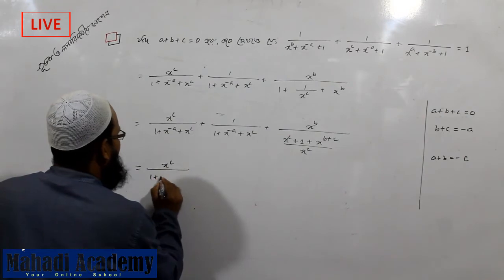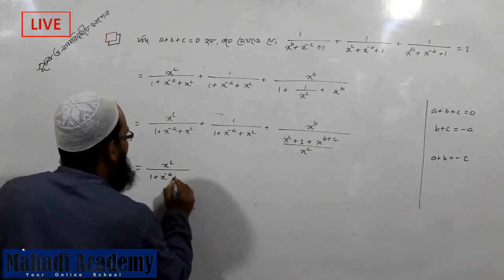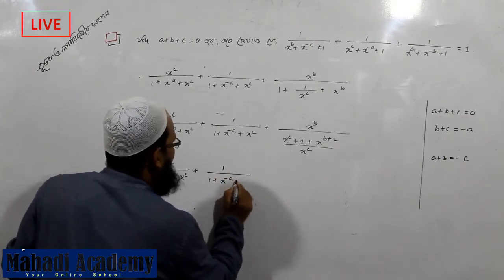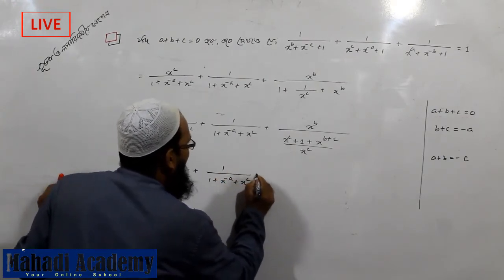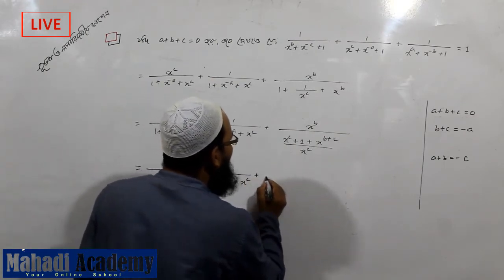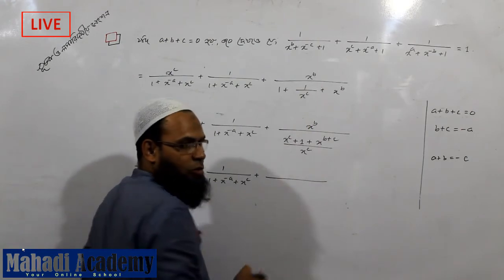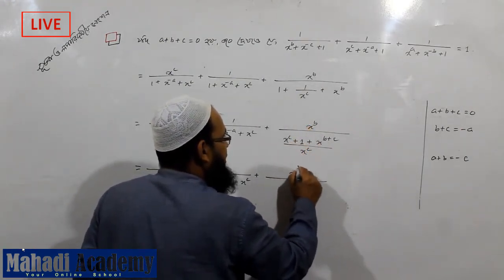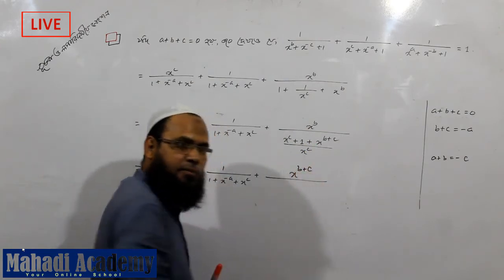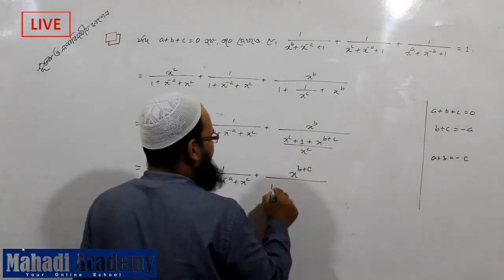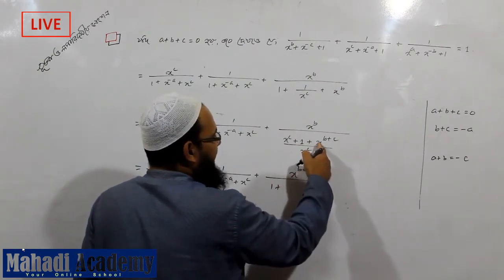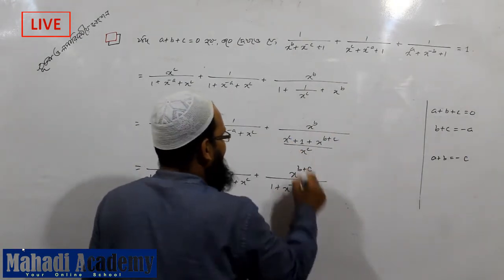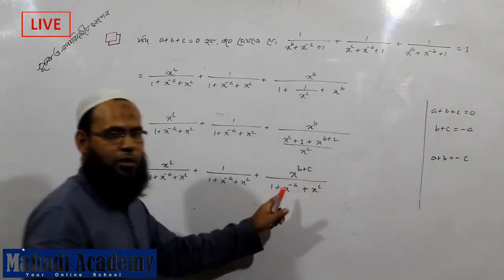I'm gonna give you x to the power c, 1 plus x to the power minus a plus x to the power c, all by 1 plus x to the power minus a plus x to the power c. X to the power b into x to the power c, then x to the power b plus c, one plus a, x to the power b plus c. You should be clear: this is x to the power c plus x to the power c plus x to the power c.